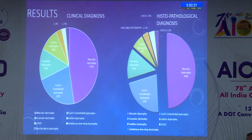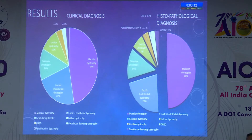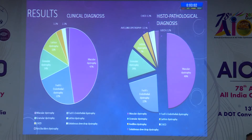The clinical diagnosis was confirmed histopathologically on tissue diagnosis using special stains in 90% of the eyes. Fuchs endothelial corneal dystrophy, CHED, and gelatinous dewdrop dystrophy were accurately diagnosed clinically.